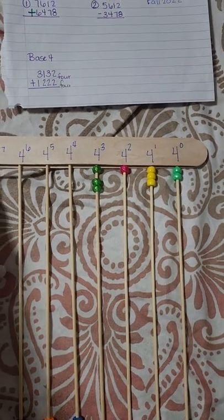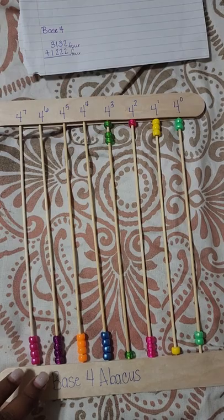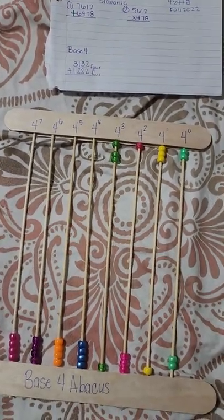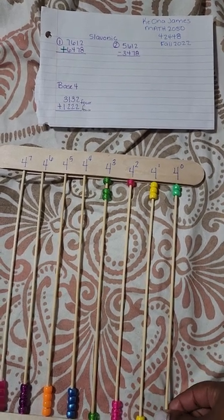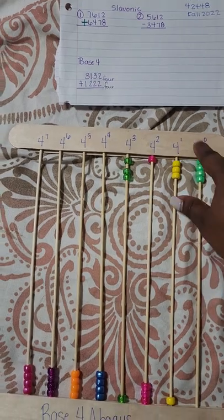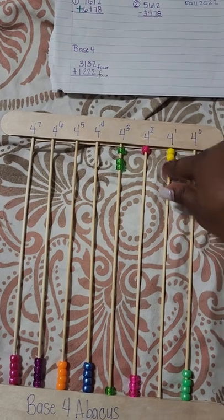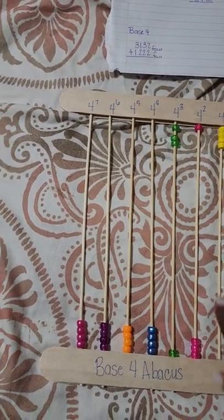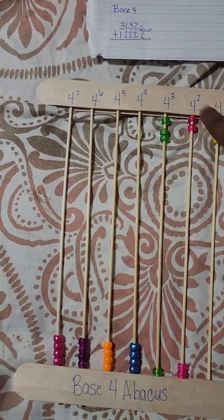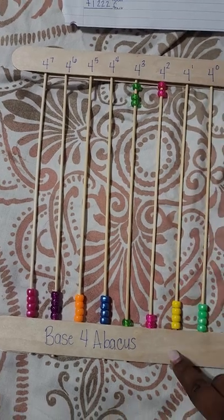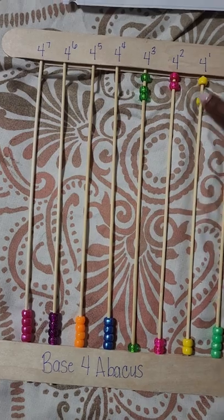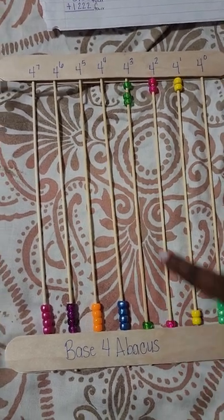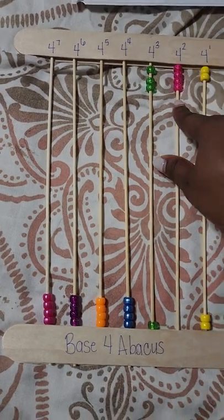We're going to do three thousand one hundred and thirty-two base-four plus one thousand two hundred and twenty-two base-four. We add two to the two already here — that made four, so we regroup and add one to our tens. We notice that when we regroup to our tens we've also made one, so our hundreds have to regroup as well. We add one and two, then add two to our hundreds: one, two — regroup because four makes one.